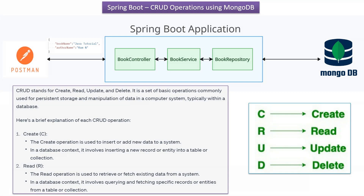C is for Create. The Create operation is used to insert or add new data to the system. In a database context, this means inserting a new record or entity into a table or collection. R is for Read. The Read operation is used to retrieve or fetch existing data from the system. In a database context, it involves querying and fetching specific records or entities from a table or collection.